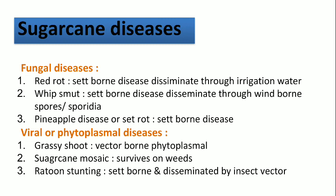Sugarcane mosaic is a viral disease — the pathogen virus survives on weeds. The next is ratoon stunting disease, which is also seed-borne and disseminated by insect vectors, since it is a viral disease.